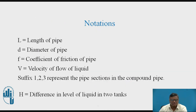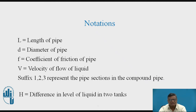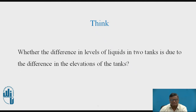The notations which we are going to use: L is the length of the pipe, D is the diameter of the pipe, small f is the coefficient of friction of the pipe, V is the velocity of flow of liquid. Suffixes 1, 2, 3 represent the pipe sections in the compound pipe. Capital H represents the difference in level of liquid in the two tanks.